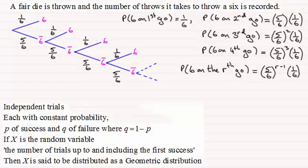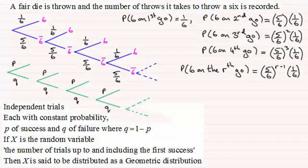What do we mean by a geometric distribution? Well, it's got to have these properties. And the tree diagram that we would get with it would look something like this. What we have to have is independent trials, each with constant probability, p of success and q of failure, q being one minus p. And if X is the random variable, the number of trials up to and including the first success, then X is said to be distributed as a geometric distribution.